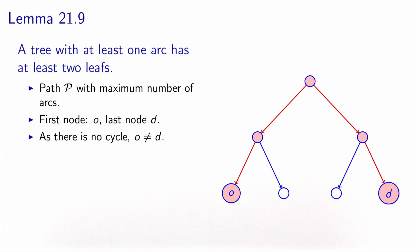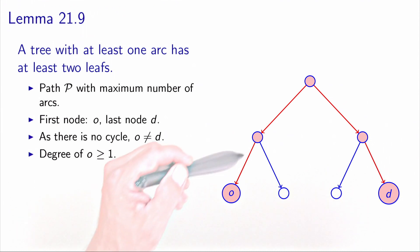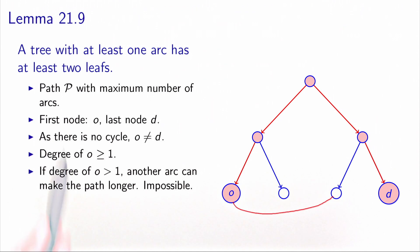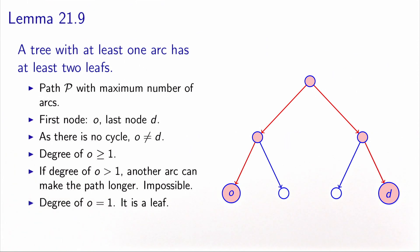Because it's a tree, there is no cycle, so we know that the origin O and the destination D are two different nodes. The degree of O is greater than or equal to one, because there is at least one arc that is incident to O, because it's in the path. Now assume that the degree of O is strictly greater than one — it means that there is somewhere an additional arc that would make the path longer. But this is impossible, because the path we have considered is the longest possible. So there is no such arc. Therefore, the degree of O is equal to one, and by definition, it is a leaf.